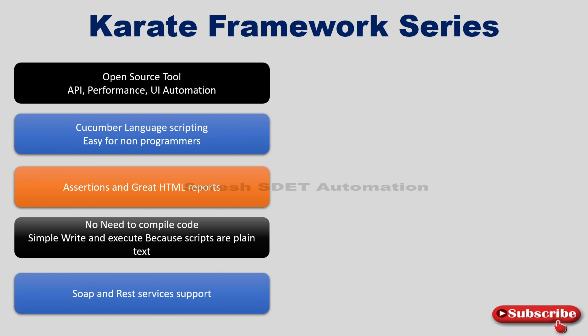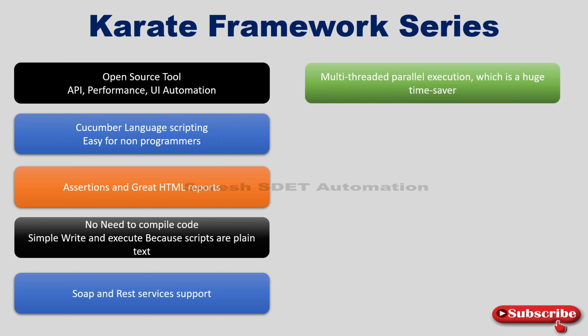In API testing, Karate supports both SOAP and REST services. Those two have different structures, and few tools support only one of them. The Karate framework supports both REST and SOAP services, which is one of the big advantages it offers.